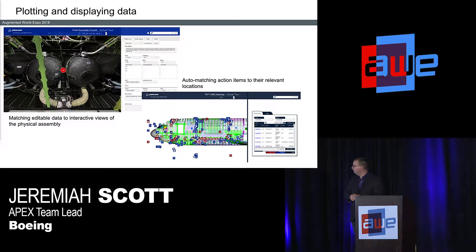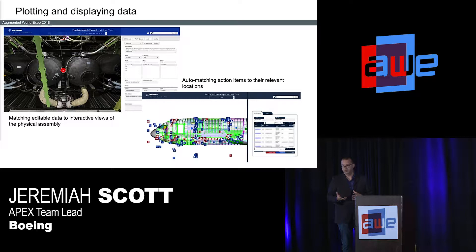The lower one is an example of a data set that we can pull from and then plot automatically on the aircraft to show where on the aircraft that data is common to. We can use that with photography or 3D models. In this case, we didn't have a photograph available, so we used a model. But it's a nice, quick visualization tool for plotting large amounts of data.